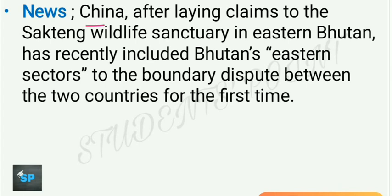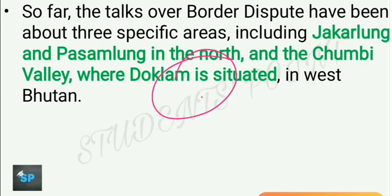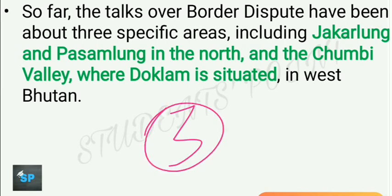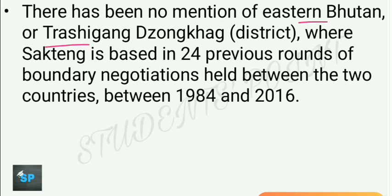China, after making claims to Sakteng Wildlife Sanctuary in eastern Bhutan, has recently included Bhutan's eastern sectors in boundary disputes between the two countries for the first time. Previously, only three parts of territory were considered disputed: Jakarlung and Pasamlung in the north, and the Chumbi Valley where Doklam is situated in the west of Bhutan. There has been no mention of eastern Bhutan or the Trashigang district where Sakteng is located in the last 24 rounds of boundary negotiations held between Bhutan and China from 1984 to 2016.